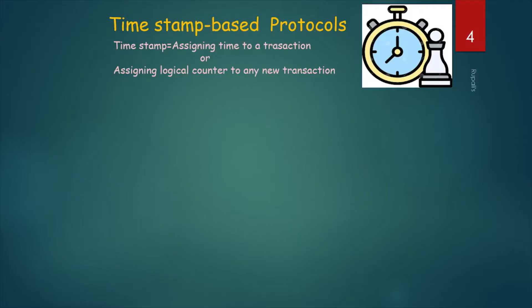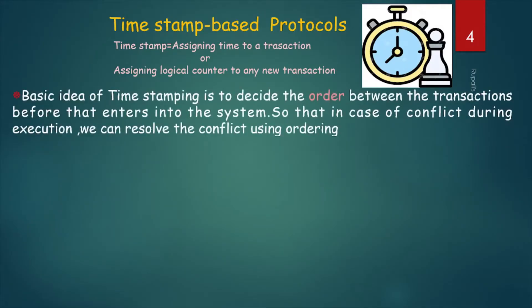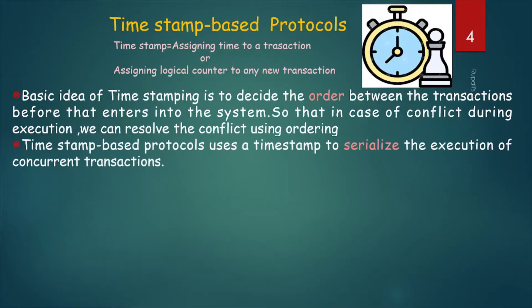What is timestamping? It means assigning time to a transaction — we are assigning one logical counter to any new transaction. The idea behind that is we have to decide the order between the transactions before they enter into the system. Which transaction comes first, which comes late — we have to decide the order. If any conflict arises during execution, we can resolve it according to that ordering. This protocol uses a timestamp to serialize the execution of concurrent transactions.